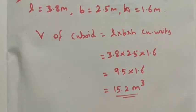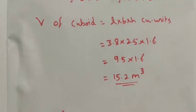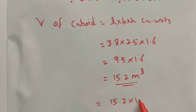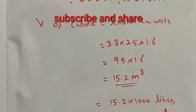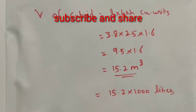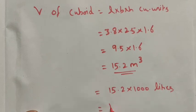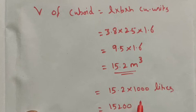Now we want to find out how many liters of water it contains. Liters means the volume unit should be converted into liters. Therefore, this term can be multiplied by 1000 liters. If you multiply by 1000, the meter cube should be converted into liters. So after multiplying we get 15,200 liters.